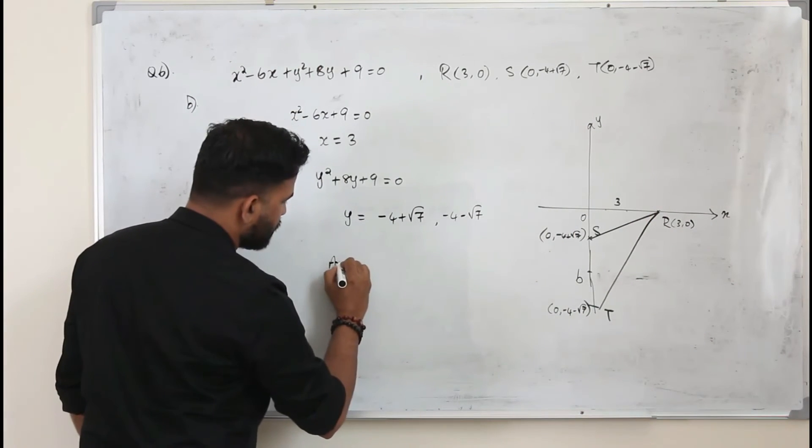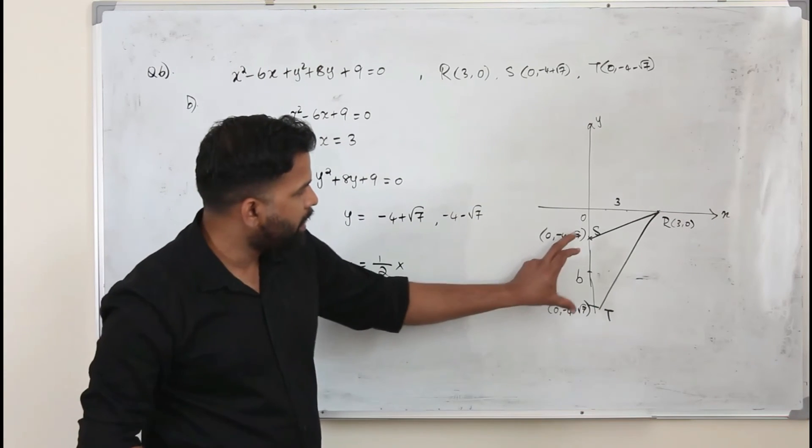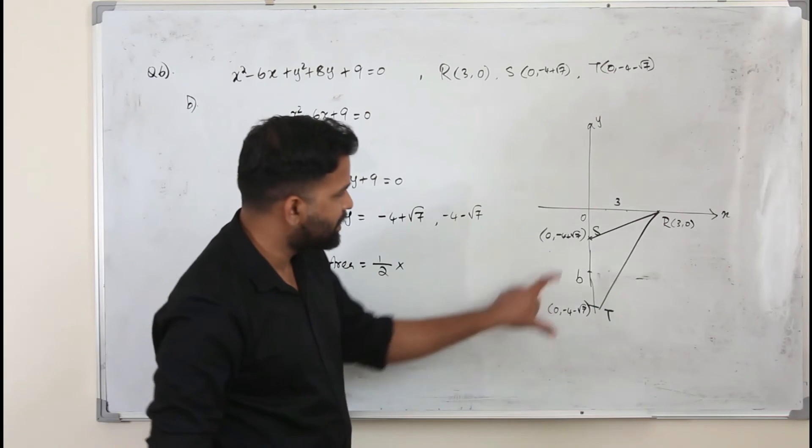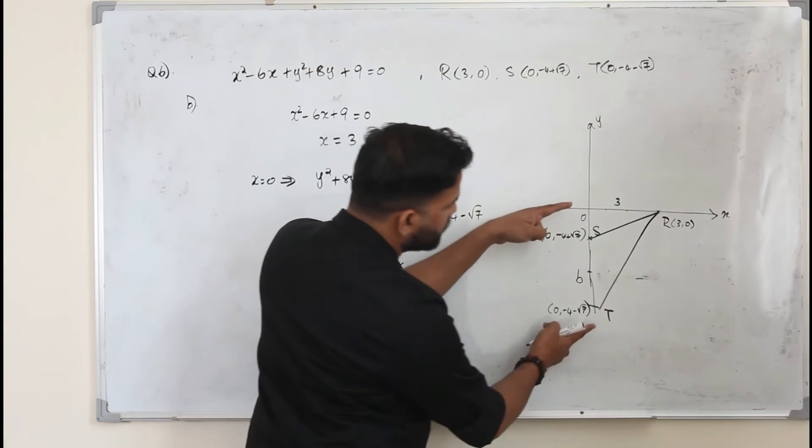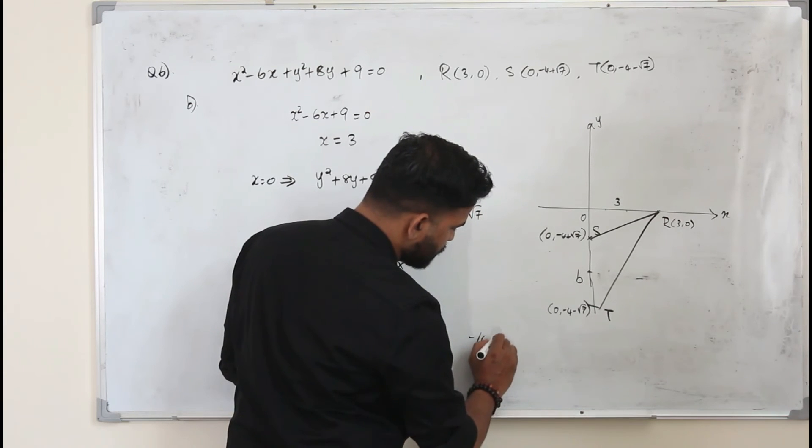So the area is half times base. How do we find the base, this length? You take the total length. Total length is this, minus 4 minus root 7. Take the total length, subtract this length.